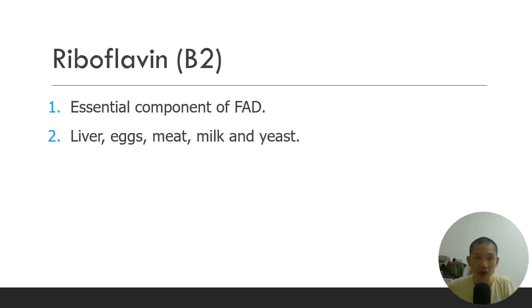Riboflavin, vitamin B2, is an essential component of FAD. As seen in video number five, FAD becomes FADH2, which is a coenzyme involved in energy production. Without this vitamin, you cannot produce energy. These are some examples of foods rich in vitamin B2.